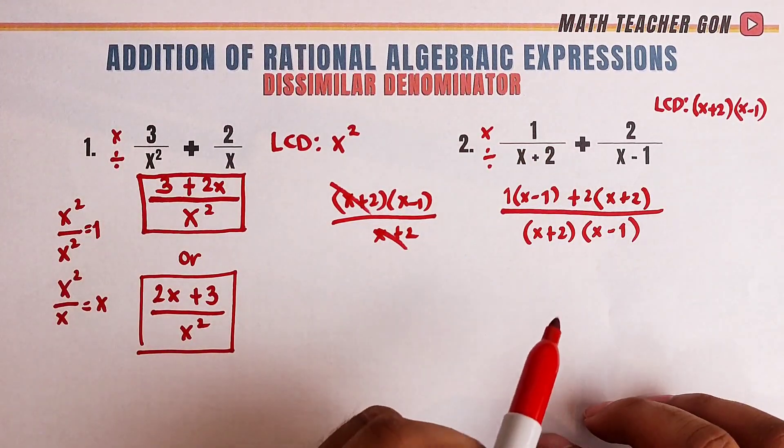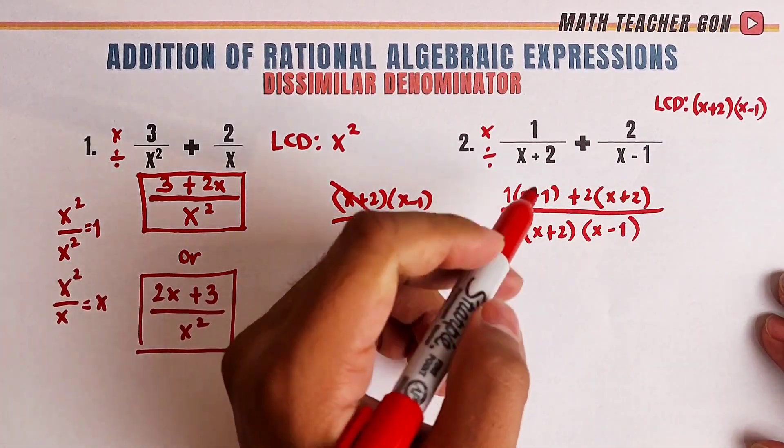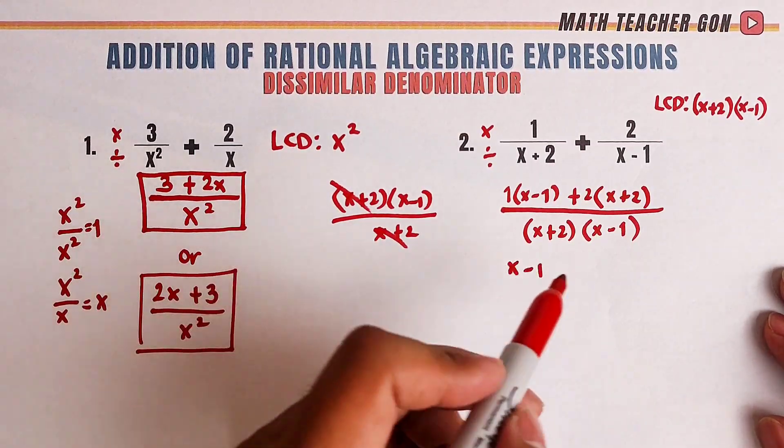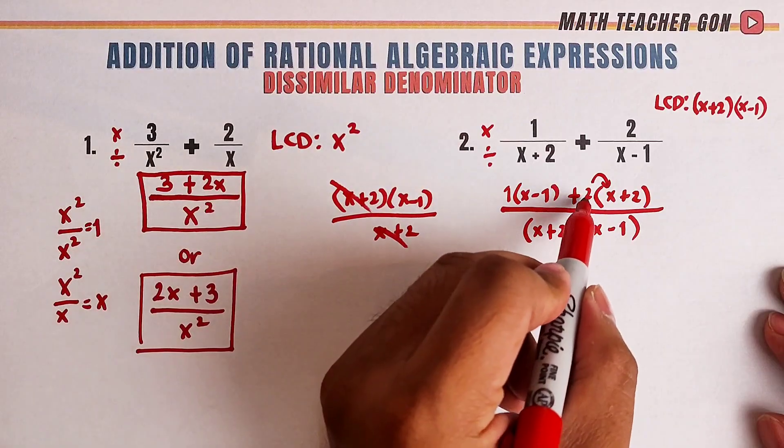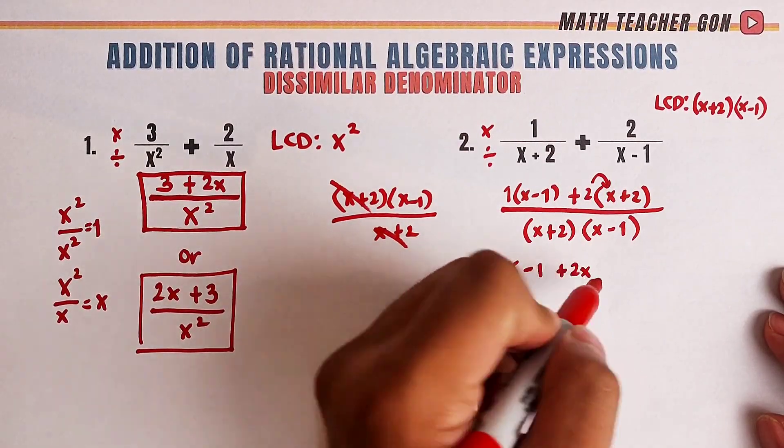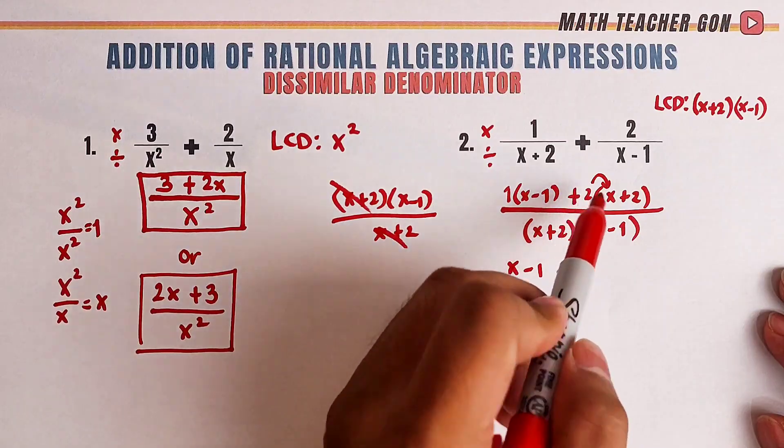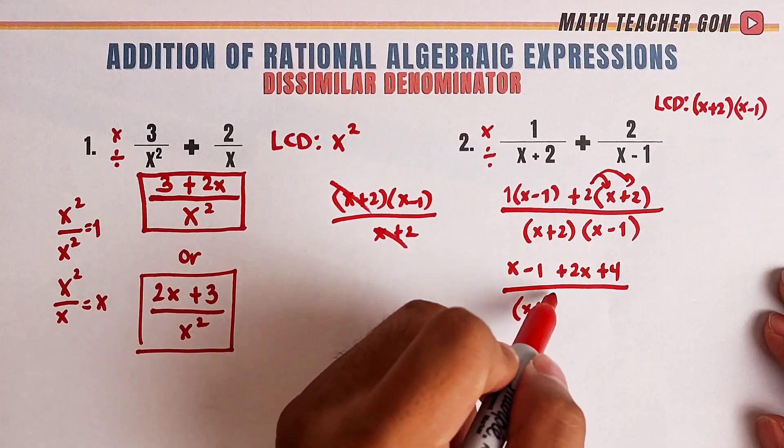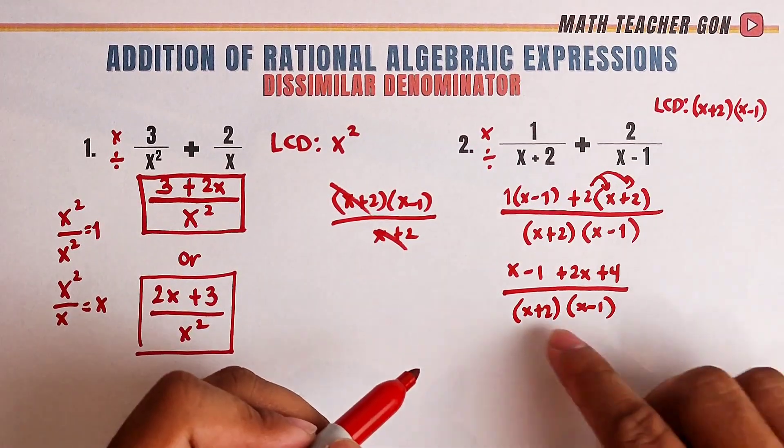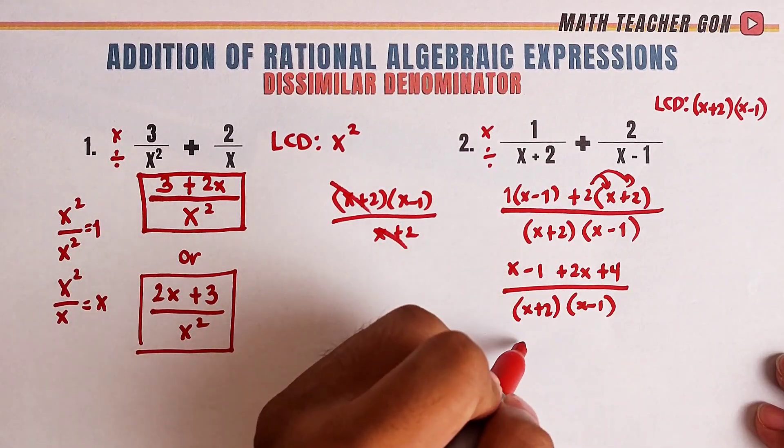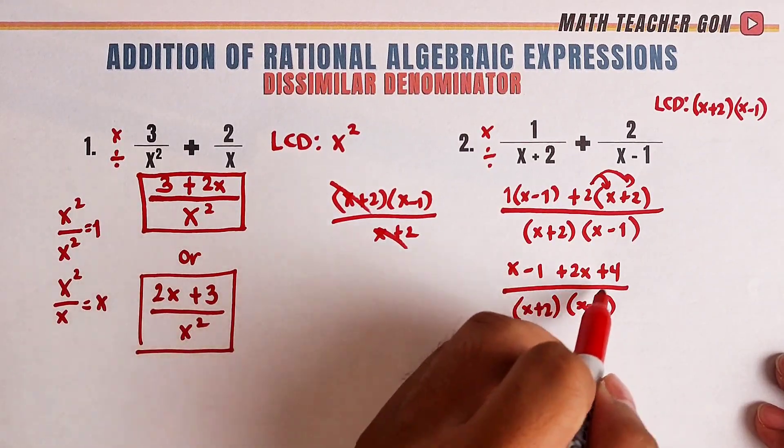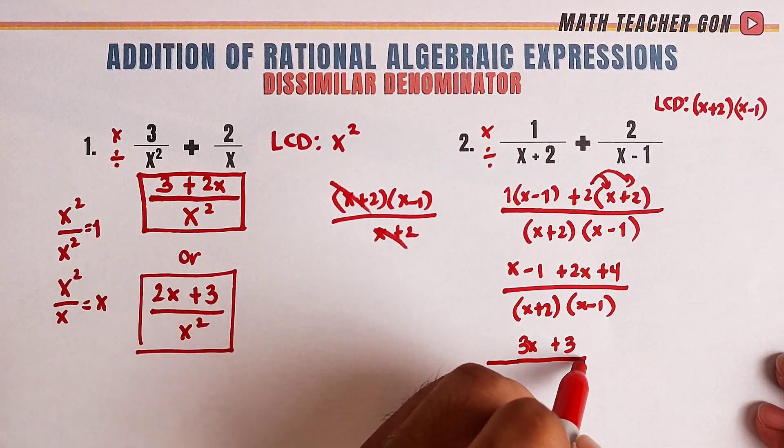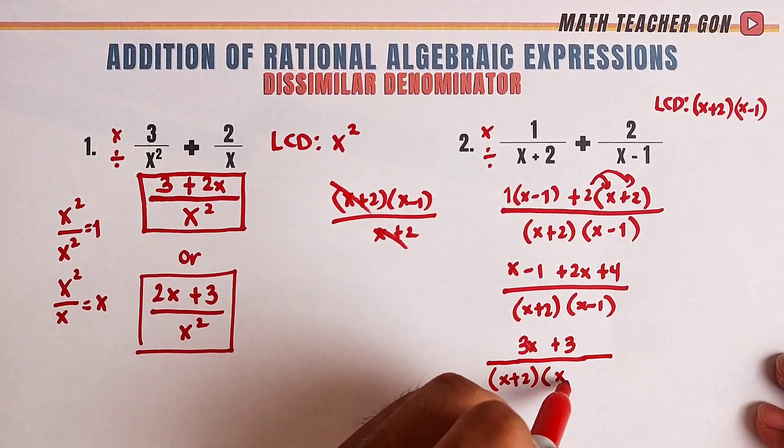Now, what's next? We can still simplify this. This is 1, so we will copy x minus 1 because nothing will happen when you multiply a number by 1. And this one, distributive property, 2 times x that would be plus 2x, 2 times 2 that would be plus 4 over x plus 2 times x minus 1. We will combine like terms. This will become 3x, negative 1 plus 4 that would be plus 3 over x plus 2 times x minus 1.